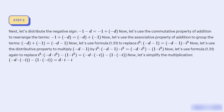Now let's use formula 1.31 to replace i³. We write −d − 1 as −d − 1 times i³. Then, using the distributive property to multiply (−d − 1) by i³: (−d − 1) × i³ = (−d × i³) − (1 × i³).